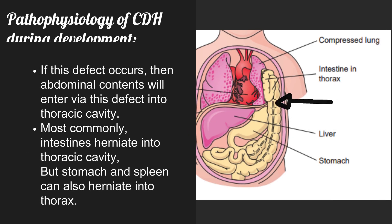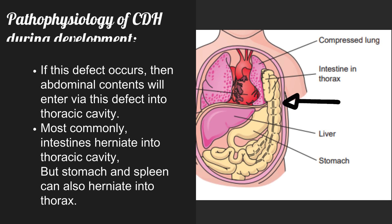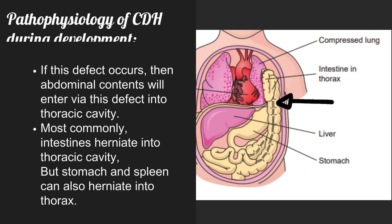If this defect occurs, then abdominal contents will enter through this defect into the thoracic cavity. Most commonly, intestines herniate into the thoracic cavity, but the stomach and spleen can also herniate into the thorax.